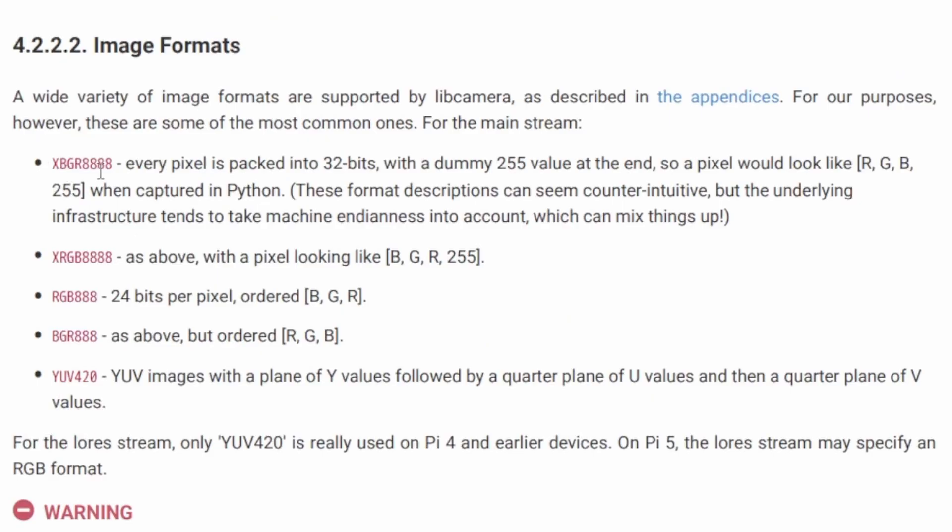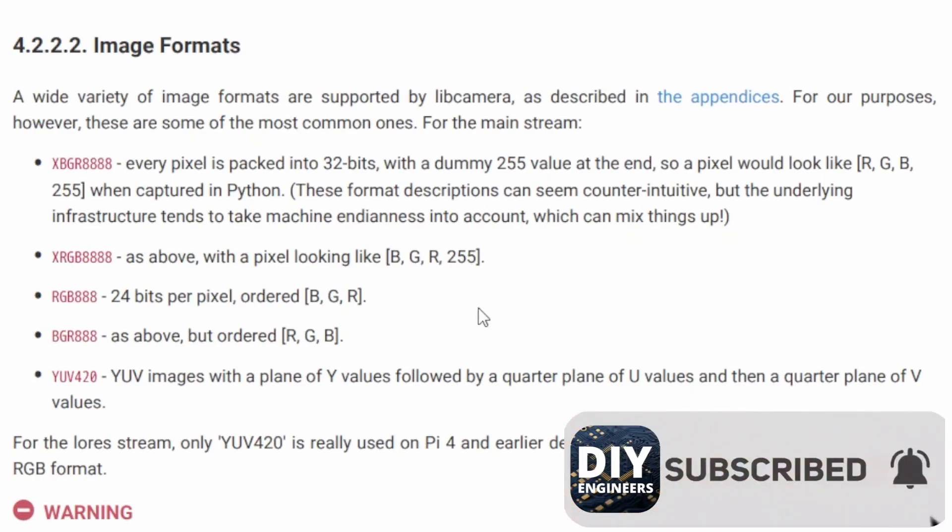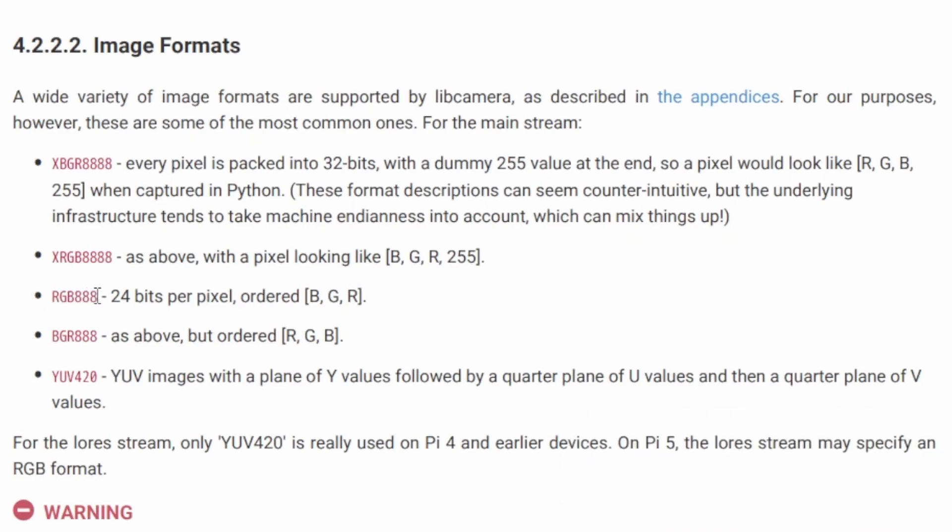You have XBGR8888, which means every pixel is packed into 32 bits and that looks like the typical RGB followed by an alpha channel that tells you how transparent that pixel is. So it gives you an extra data point for transparency. You can also order them as BGR, and then you have the typical BGR or RGB option. If you just want BGR you need to pick RGB888, and if you want RGB you have to pick BGR888.